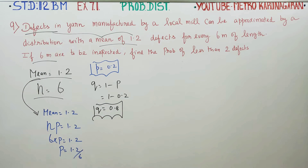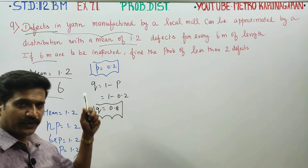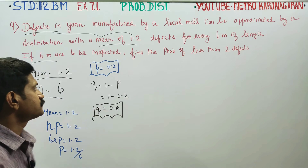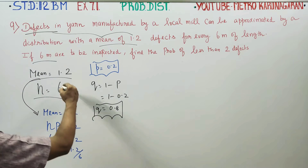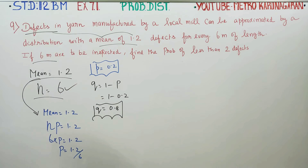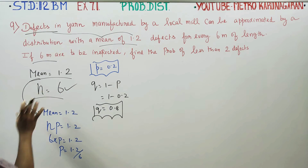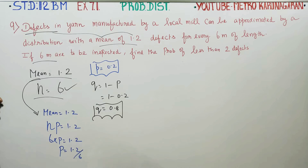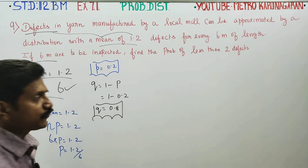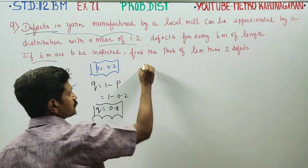After finding the values of P and Q, N is already available. With N available, you can go for binomial distribution.